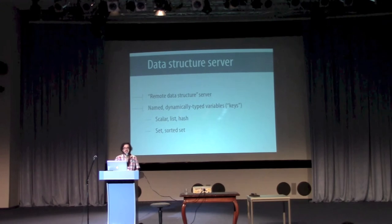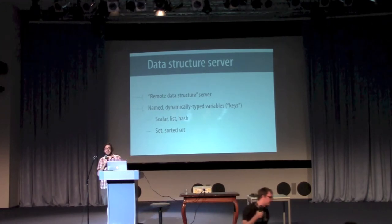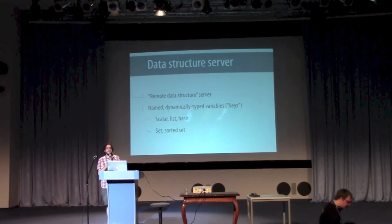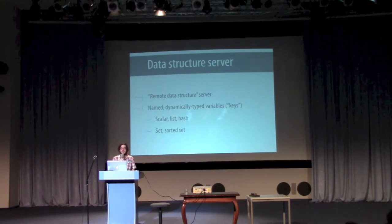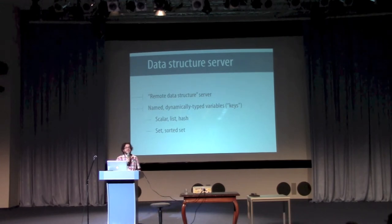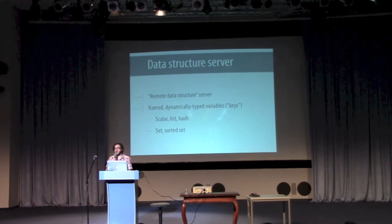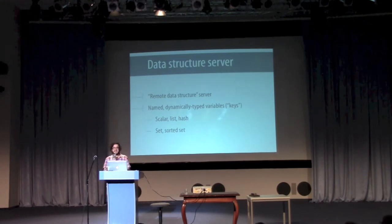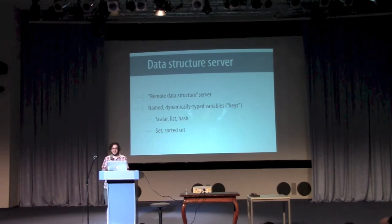One way to think about it is as a remote data structure server. Redis keeps track of a collection of named variables, or keys as the Redis documentation puts it, and each variable has one of five data types. There are scalars, lists, and hashes, which all work much the same way as their Perl equivalents. And there are also sets and sorted sets. Each have their uses, and we'll encounter a few of them later.